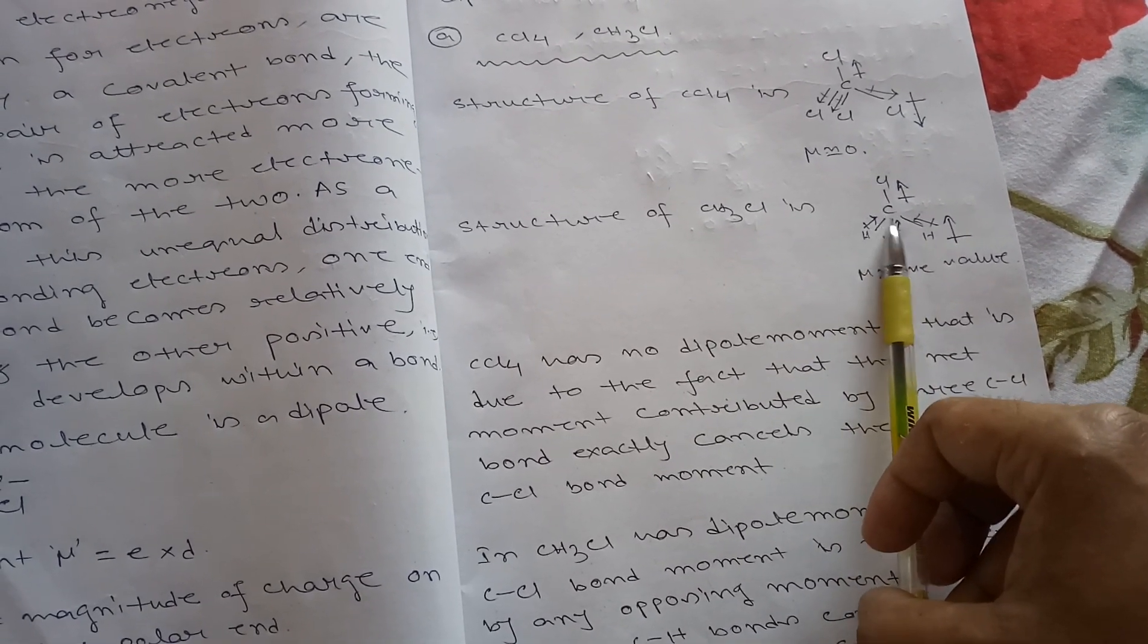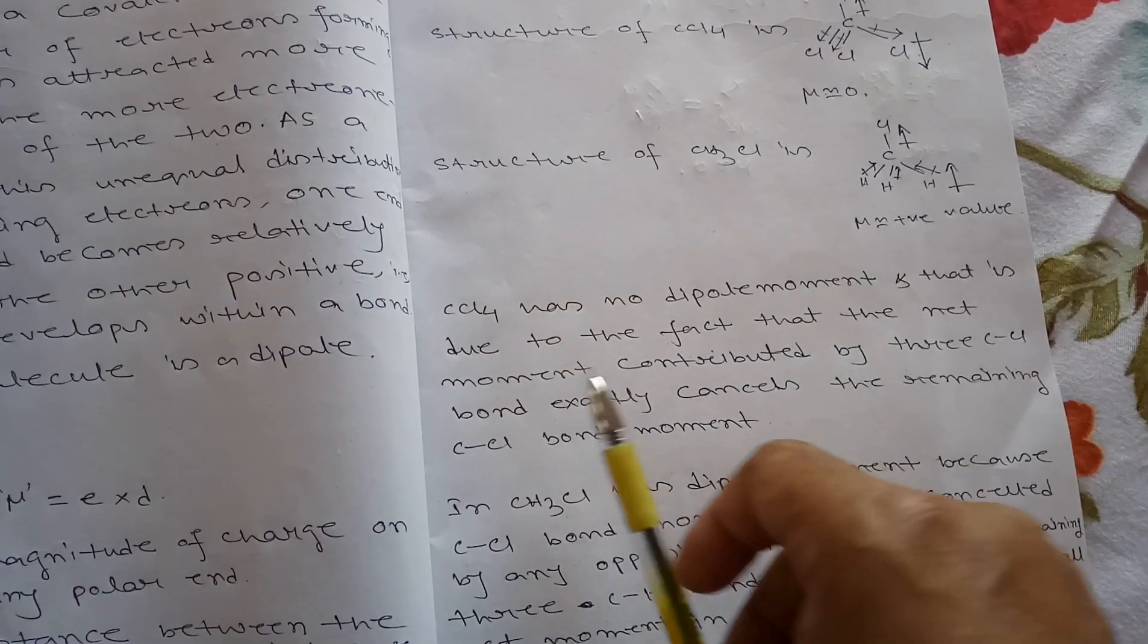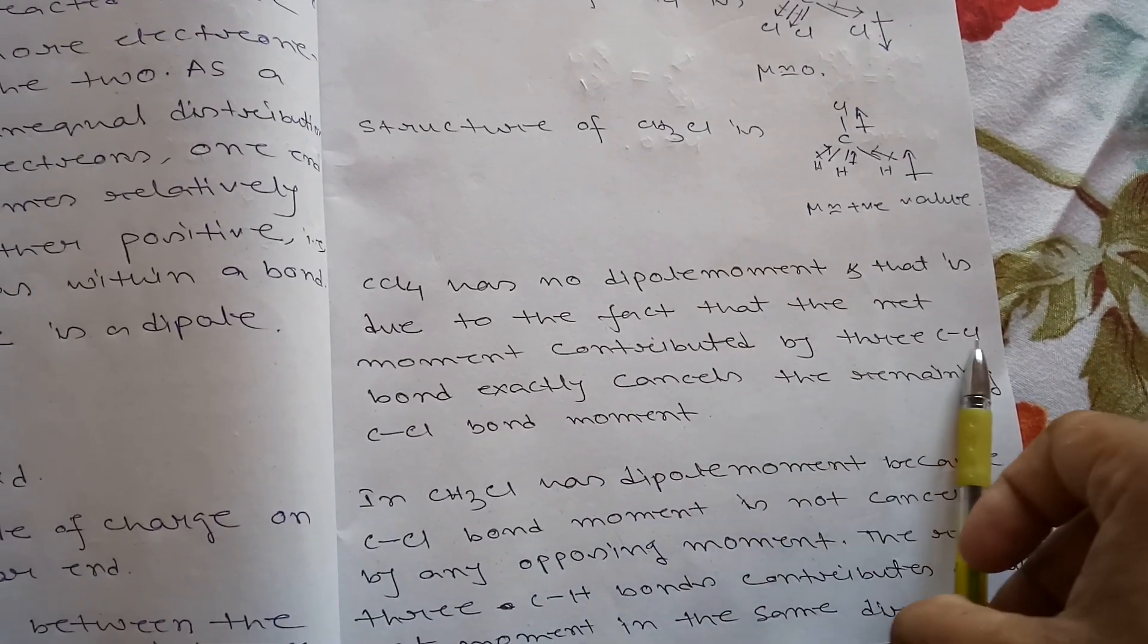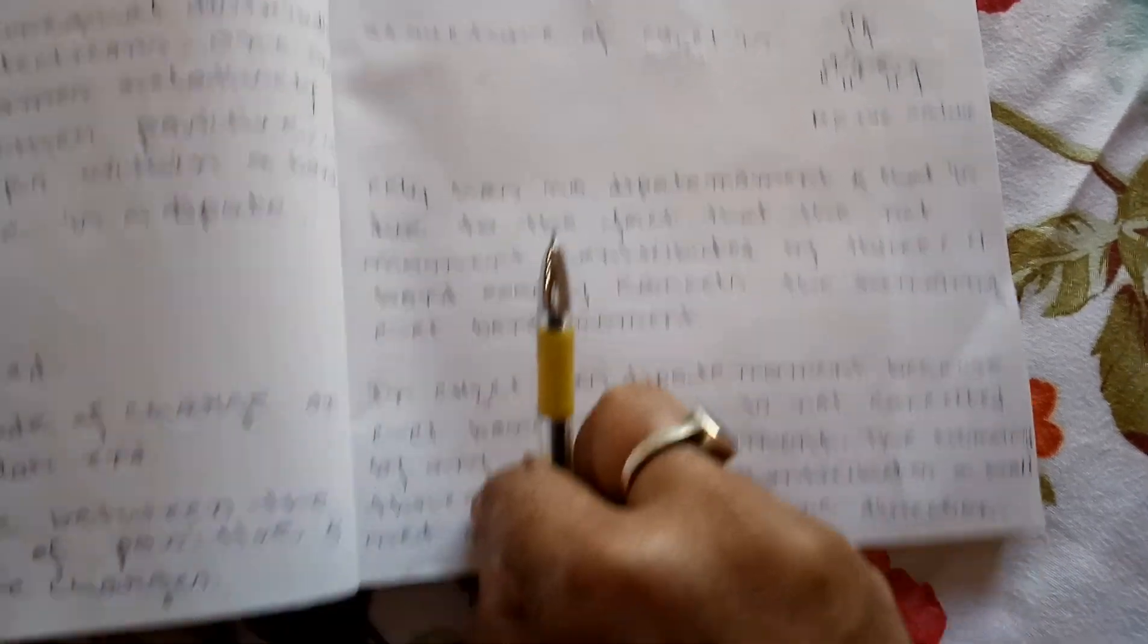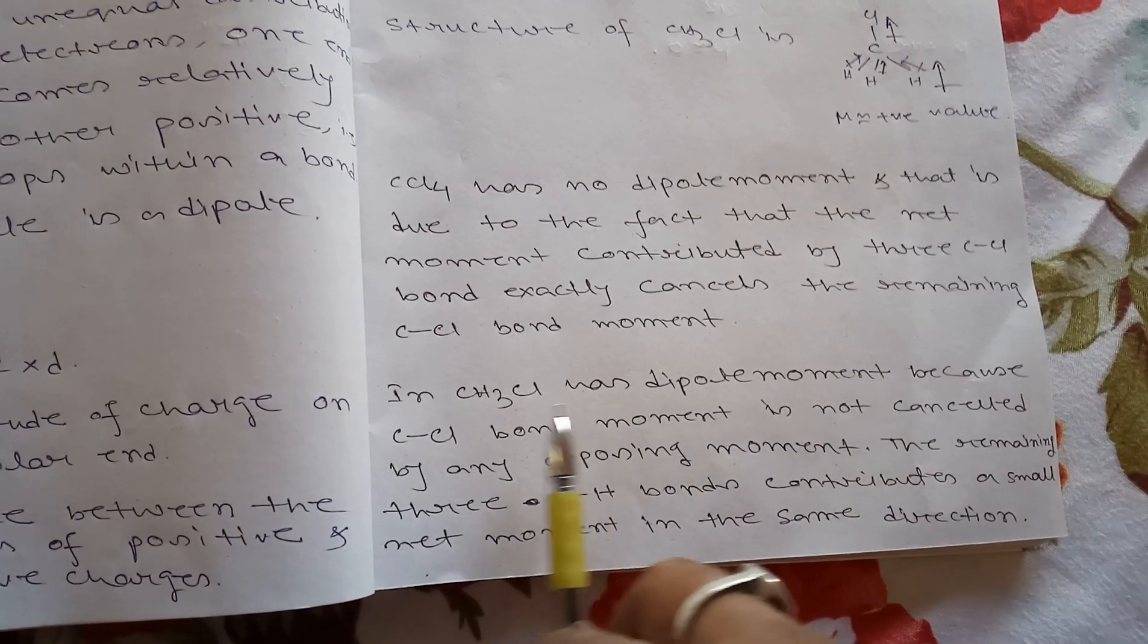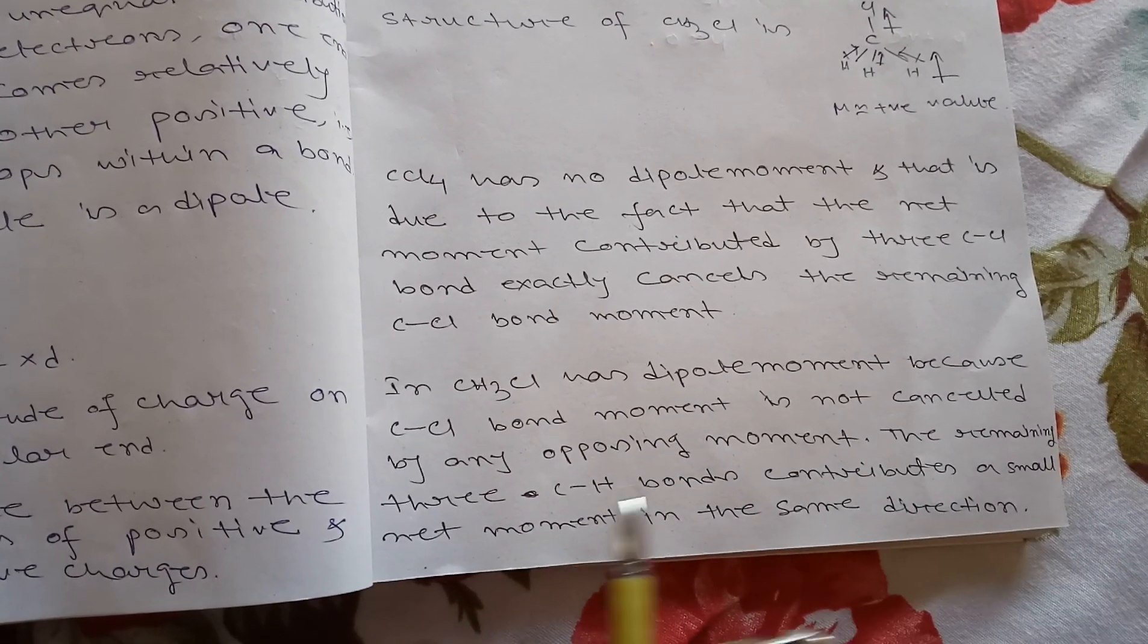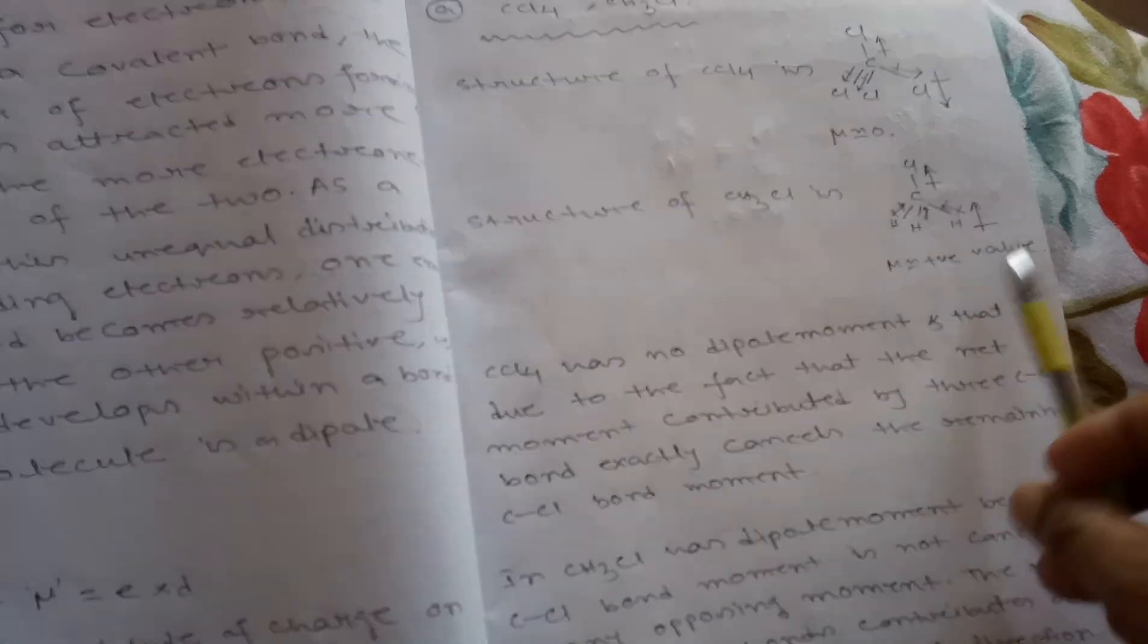That is due to the fact that the net moment contributed by three C-Cl bonds exactly cancels the remaining C-Cl bond moment. Chloroform has dipole moment. In chloroform, the CCl3 bond moment is not cancelled by any opposing moment. The remaining three C-H bonds contribute a small net moment in the same direction. That's why chloroform has positive dipole moment.